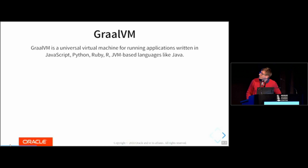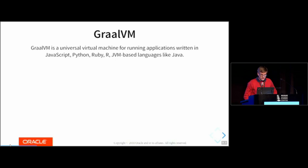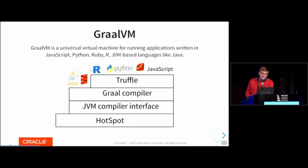GraalVM is a universal virtual machine — you can think of it as a common infrastructure for running applications written in different programming languages. Compared to GNU R and CPython (the reference implementation of Python), they are both different programs that don't share anything except very low-level libraries. GNU R has its own garbage collector, Python has its own garbage collector; GNU R has its own representation of objects, Python has its own.